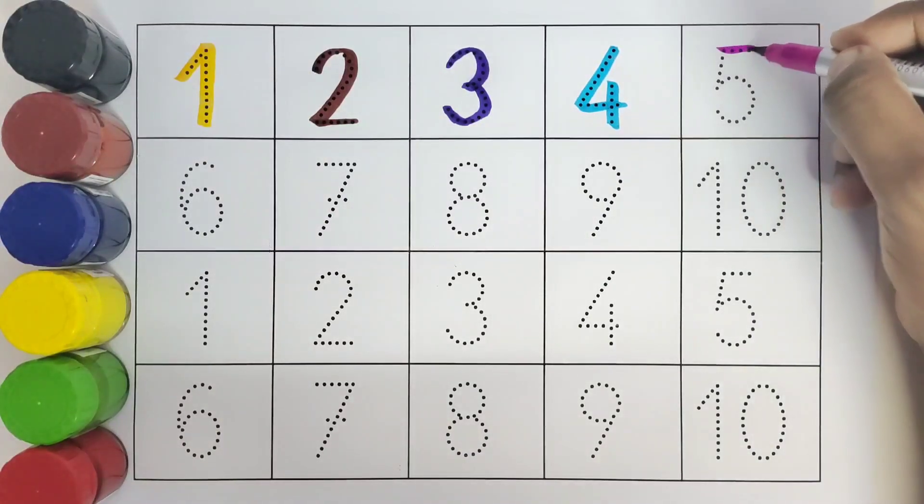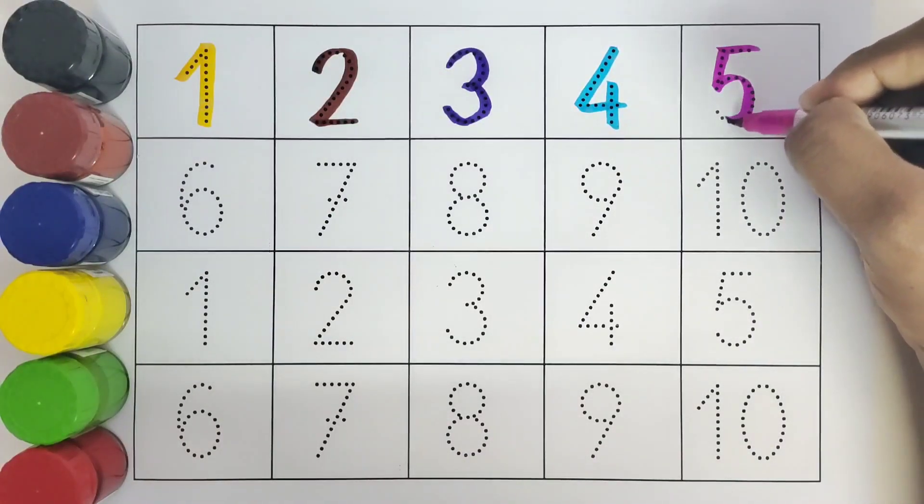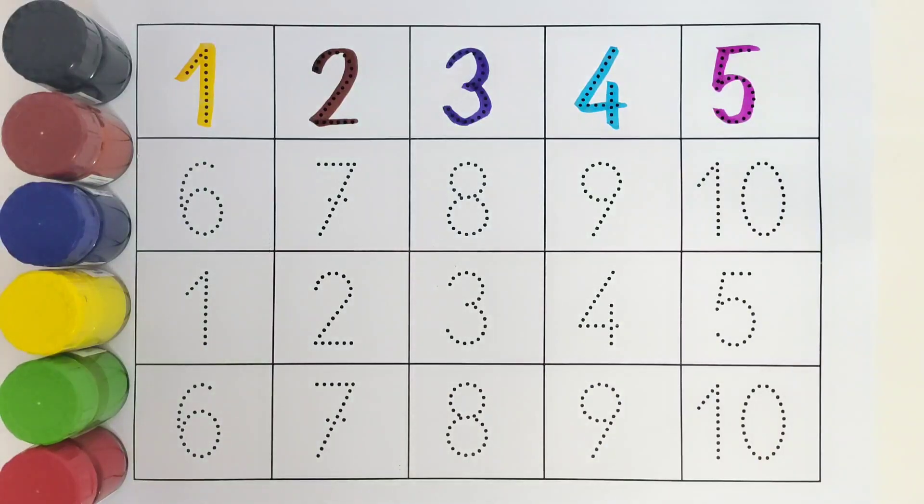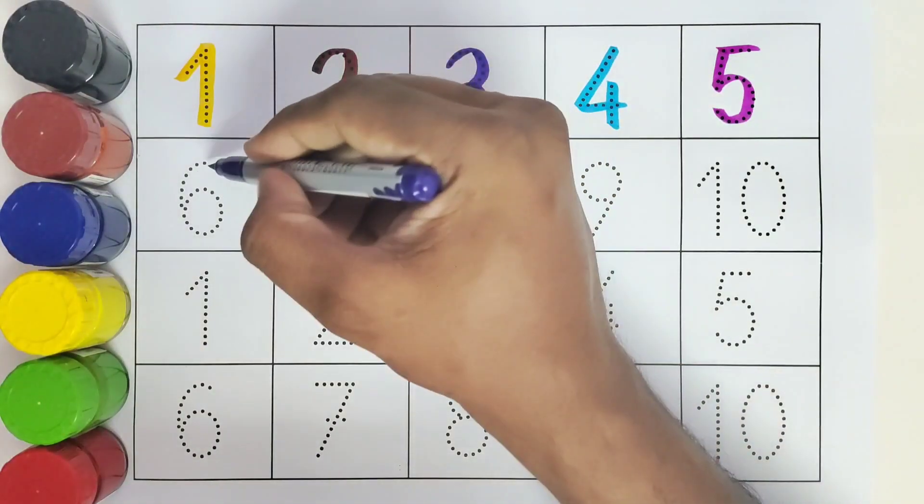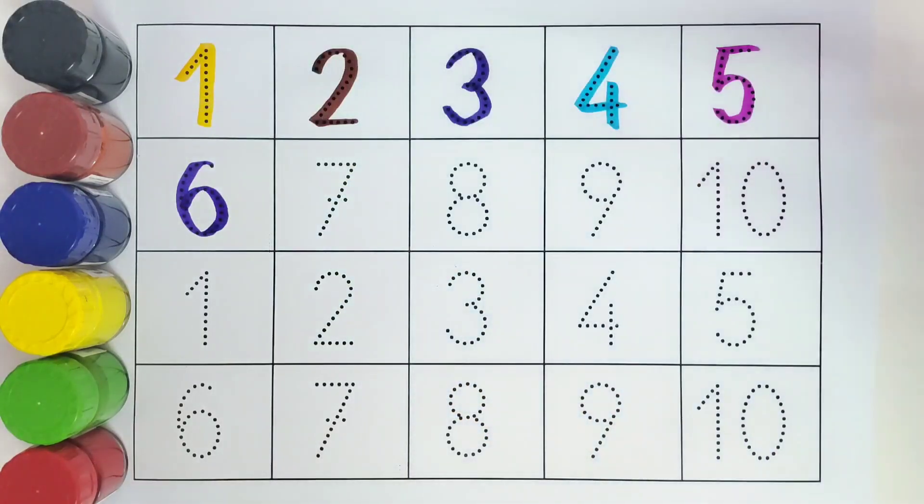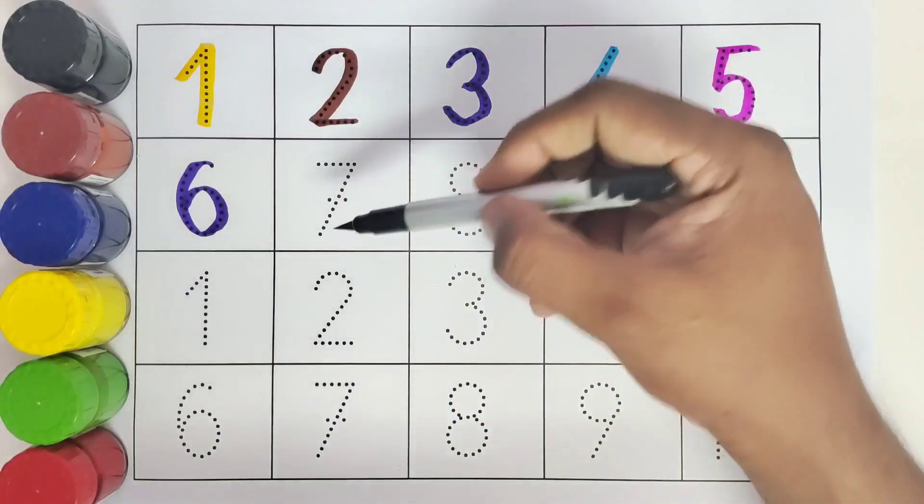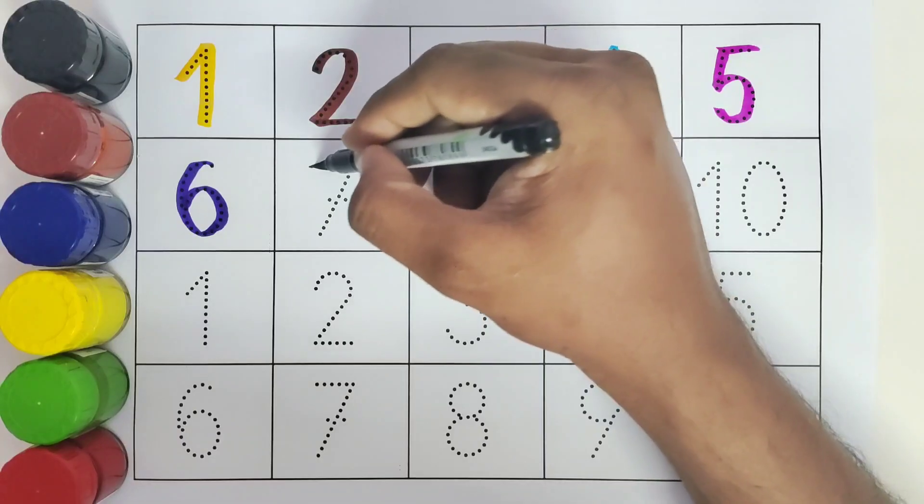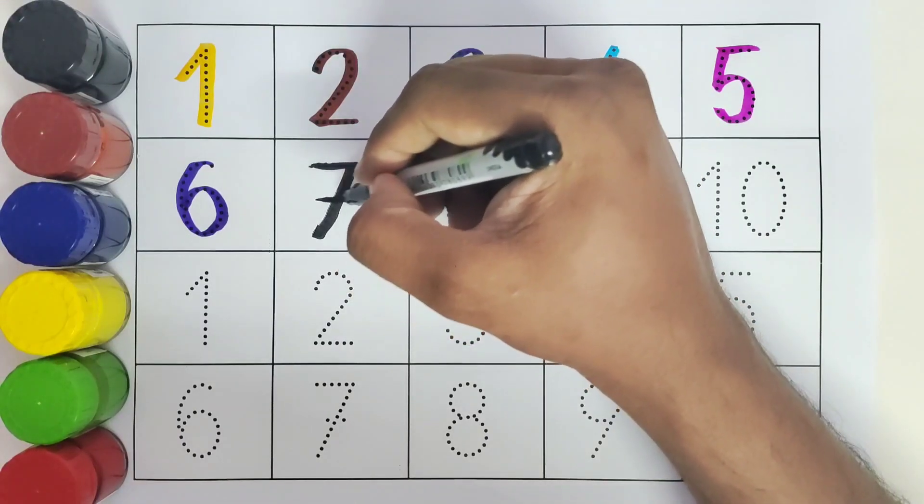This is 5, number 5. This is 6, number 6. This is 7, number 7.